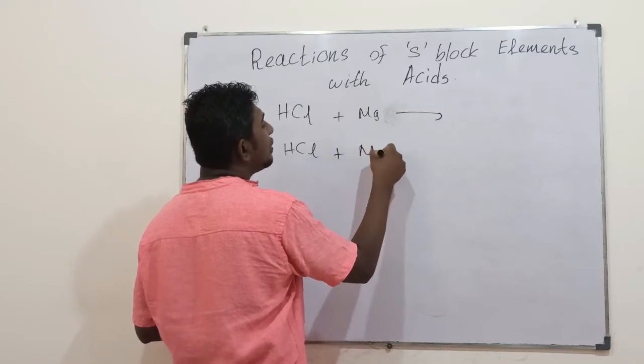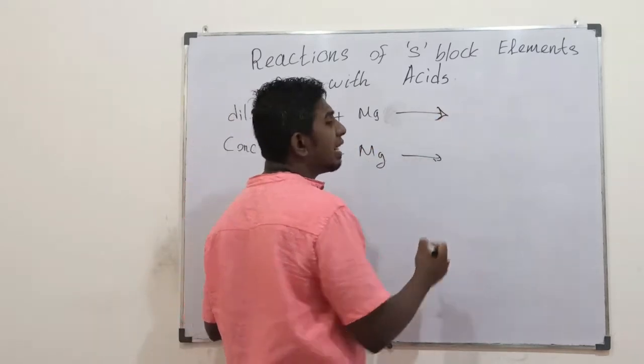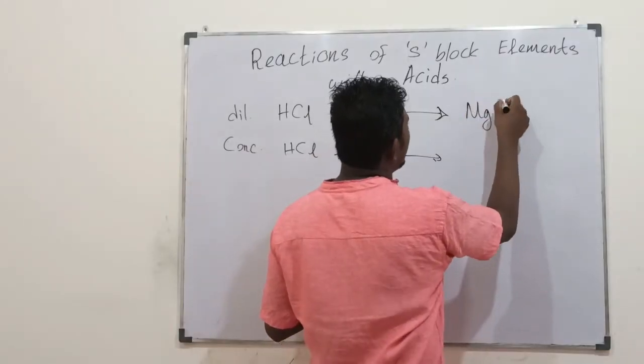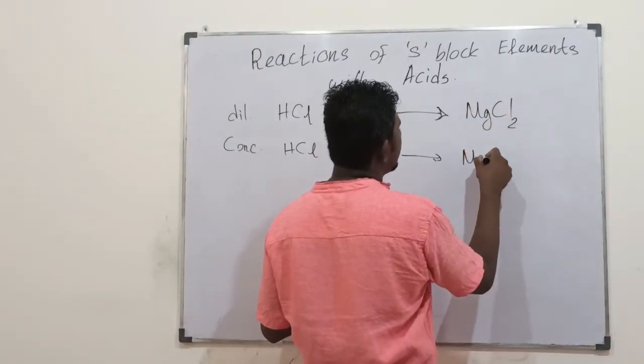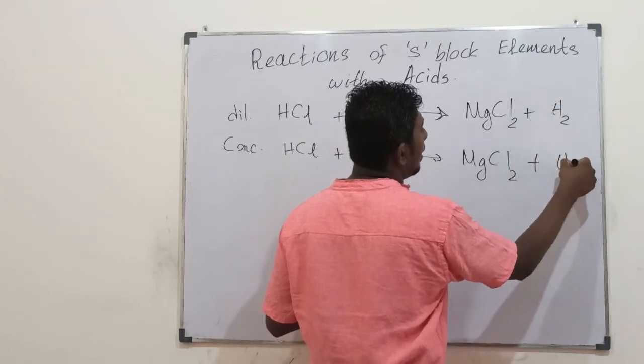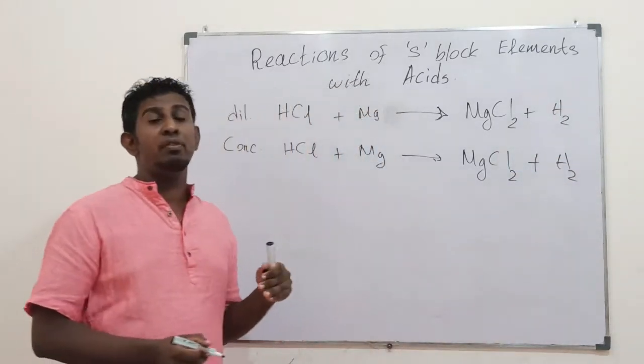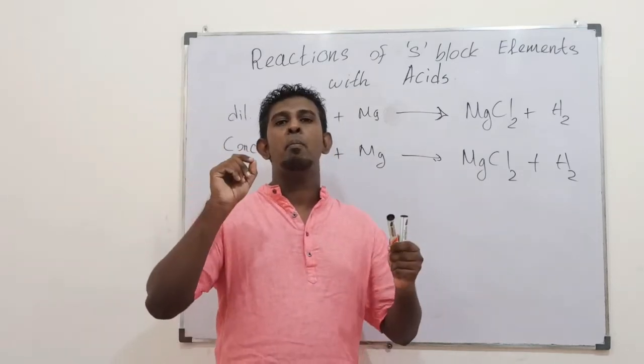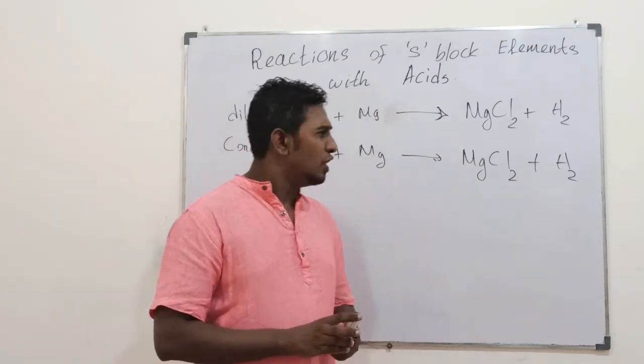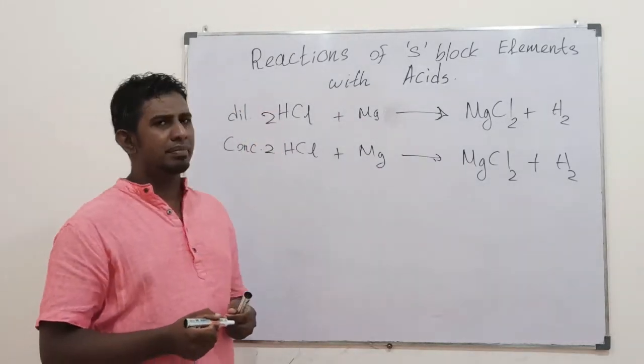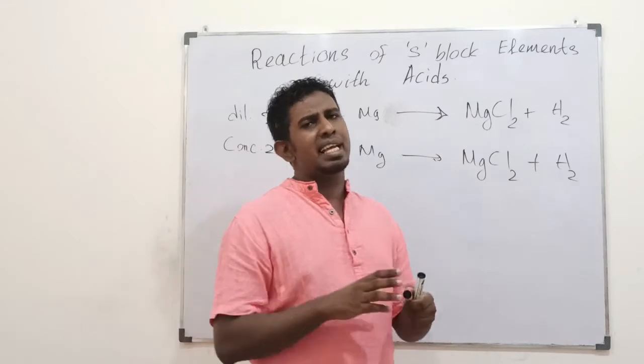Regardless of the concentration, here the products are going to be the same. Students, it's MgCl2, magnesium chloride and hydrogen. It's a colorless, odorless gas that is evolved. When you expose the burning splint, it will burn out giving you a pop sound. You could balance it in this manner.